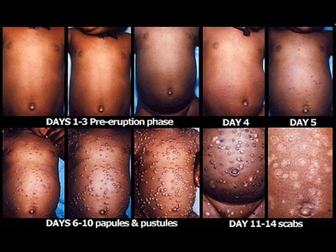The disease was originally known in English as the pox or red plague. The term smallpox was first used in Britain in the 15th century to distinguish variola from the great pox. The last naturally occurring case of smallpox was diagnosed on the 26th of October 1977.